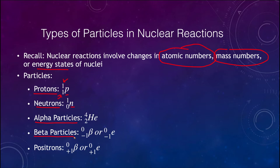A beta particle can either be an electron, written with an E or sometimes the Greek letter beta. A beta particle is actually an electron. We can also see positrons, which are similar to electrons except they have the opposite charge. They will have either a minus one or a plus one showing the charge that is present.